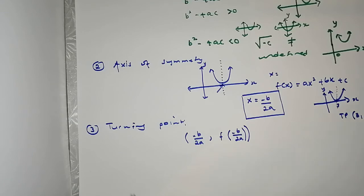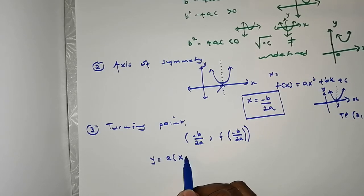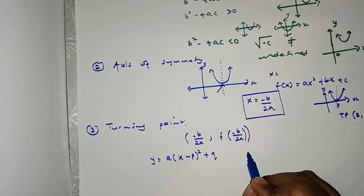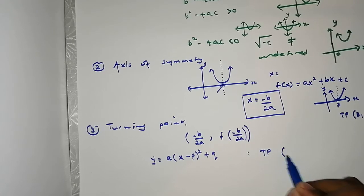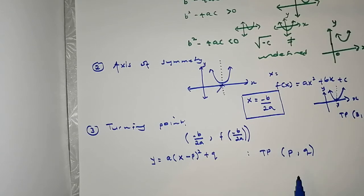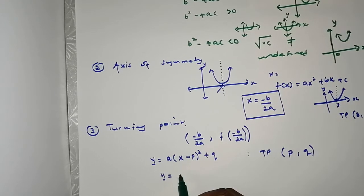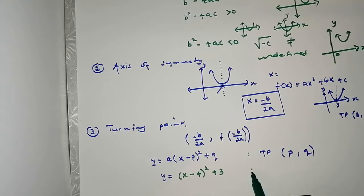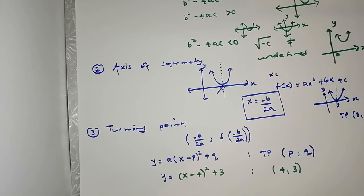If you've completed the square and your function is in vertex form y = a(x − p)² + q, you don't need to sweat — you can read off the turning point directly as (p, q). For example, if you have y = (x − 4)² + 3, the turning point is (4, 3). This is the benefit of the vertex form.